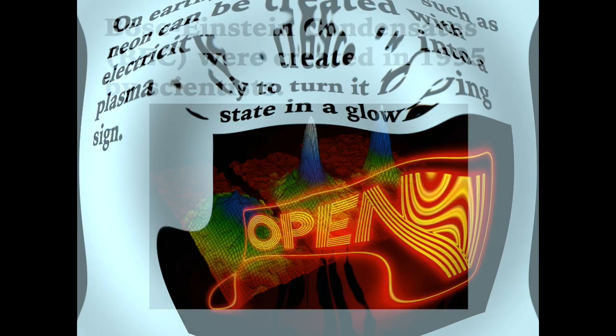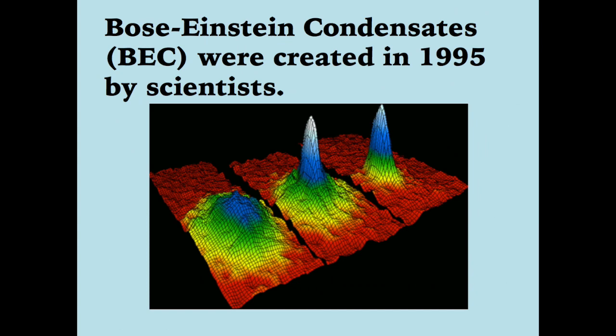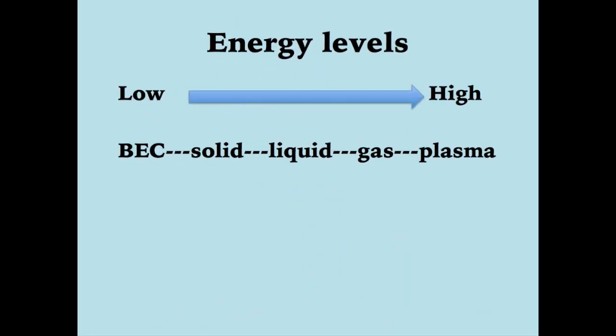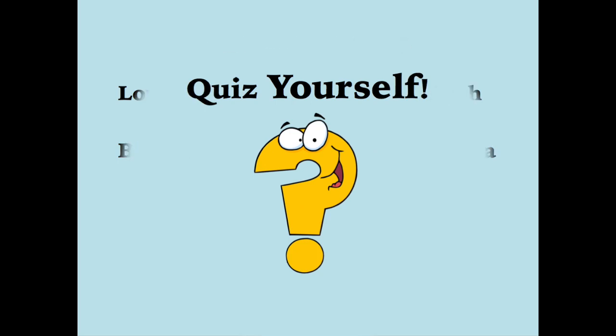On Earth, a noble gas such as neon can be treated with electricity to turn it into a plasma state, as in a glowing sign. Bose-Einstein condensates were created in 1995 by scientists who cooled atoms nearly to absolute zero, so that molecular motion almost completely stopped and the atoms began to clump together.